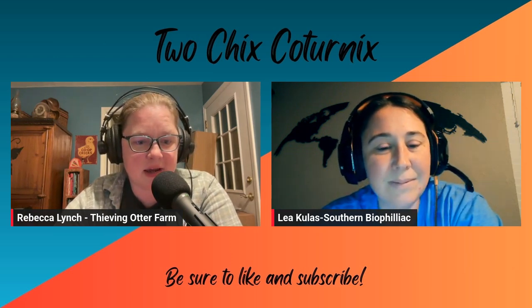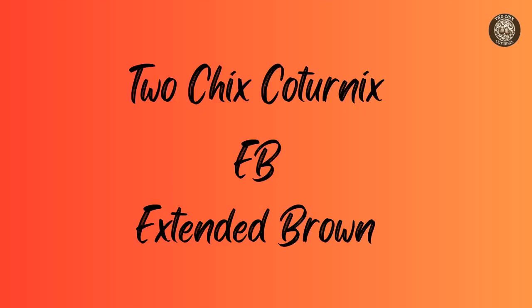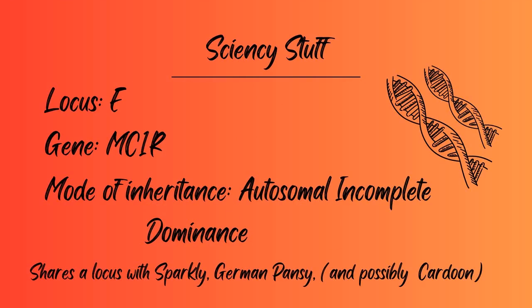Today we're going to be talking about EB. EB is short for Extended Brown. It's good to watch Genetics for Dummies if you haven't seen it yet. EB is on the E locus, and the gene is MC1R. The mode of inheritance is autosomal and complete dominant, which means even if you have one copy of the gene, you can see it.